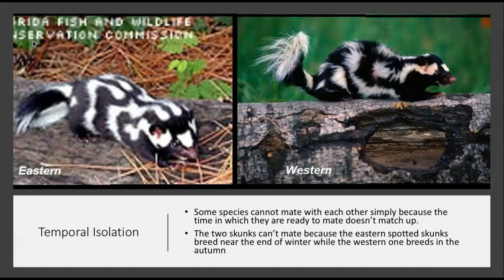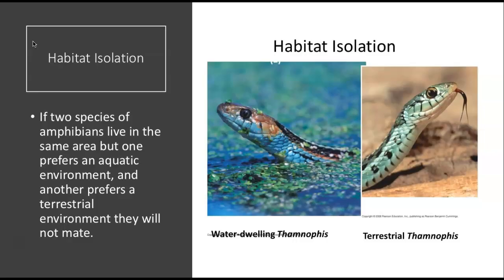Another prezygotic barrier is temporal isolation. The eastern and western spotted skunk look very similar, but these species cannot mate with each other because the time at which females are ready to mate doesn't match up. The eastern spotted skunk breeds near the end of winter, while the western one breeds in the autumn. They are never in sync, and so this temporal — or time — isolation is a prezygotic barrier.